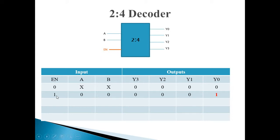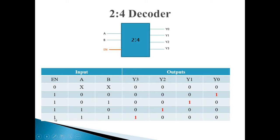In the next case, enable signal is 1 and A and B are 0, 0 — which means decimal 0 — so only Y0 output will be 1 and rest all outputs will be 0. When enable is 1 and AB inputs are 0, 1 — that is decimal 1 — only Y1 will be 1, rest all are 0. If enable pin is 1 and AB inputs are 1, 0 — that is 2 — then only Y2 will be 1. And for the last case, when enable pin is 1 and AB both are high — that means 3 — so Y3 is 1 and rest all are 0.